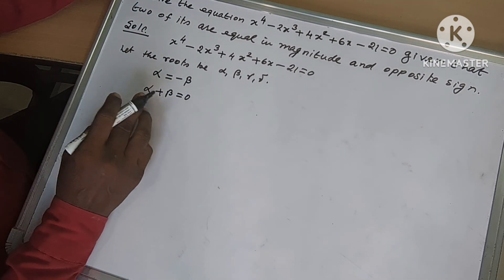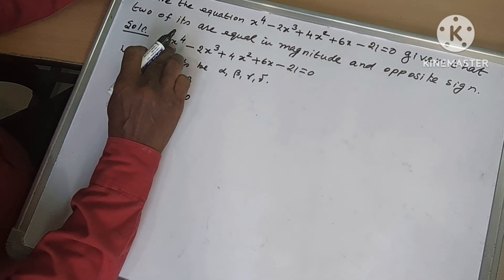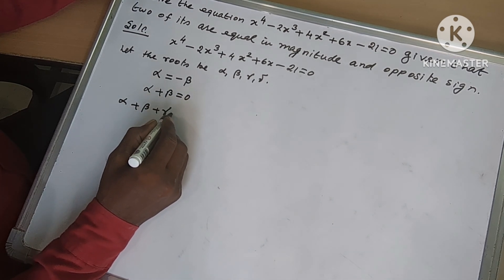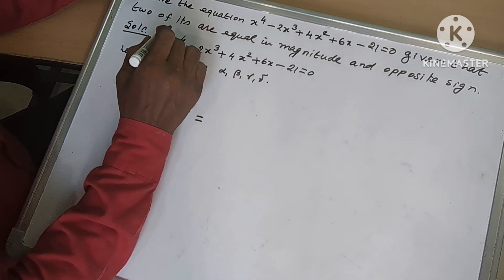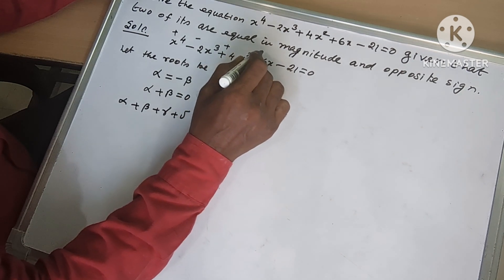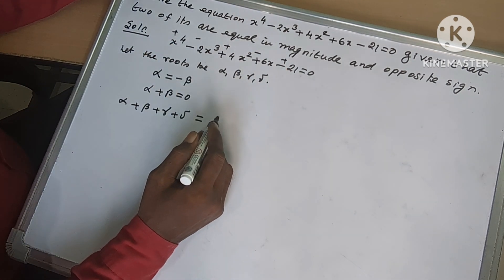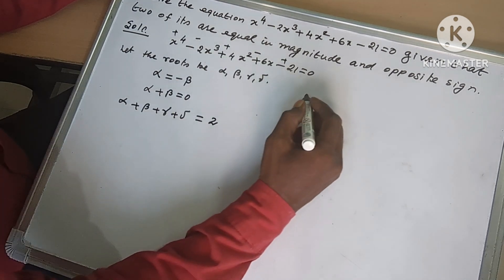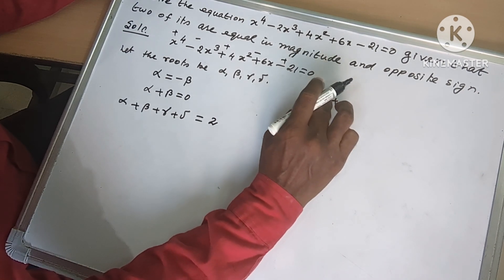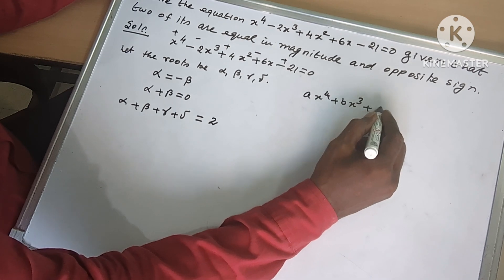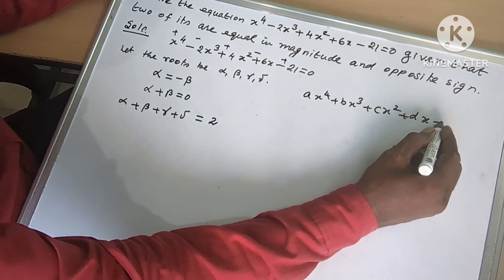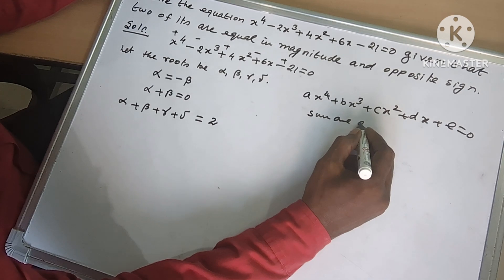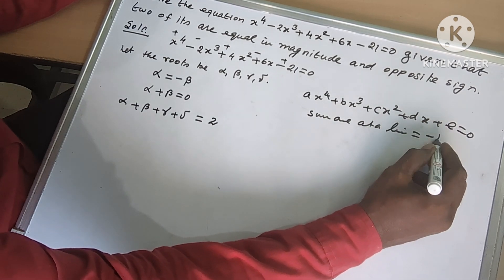Now we use this. From this equation, alpha plus beta plus gamma plus delta. Sum of the 4 roots follows the pattern plus, minus, plus, minus, plus. So minus b by a — that is minus of minus 2, which is 2. So we have ax⁴ plus bx³ plus cx² plus dx plus e equal to 0. Sum of the roots 1 at a time is minus b by a.